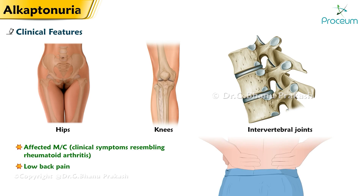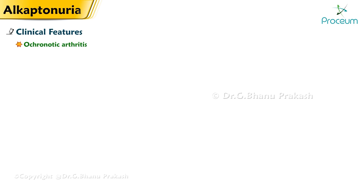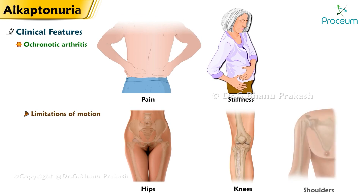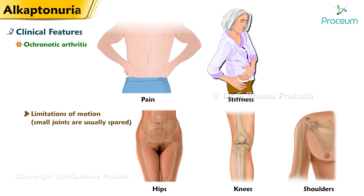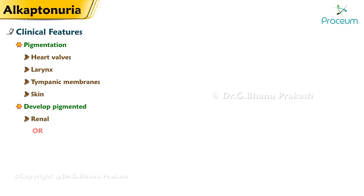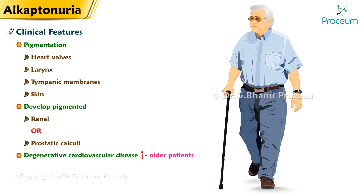Low back pain usually starts between 30 and 40 years of life. Ochronotic arthritis is heralded by pain, stiffness, and some limitation of motion of the hips, knees, and shoulders; small joints are usually spared. Pigmentation of heart valves, larynx, tympanic membranes, and skin occurs occasionally. Patients may develop pigmented renal or prostatic calculi, and degenerative cardiovascular disease is increased in older patients.